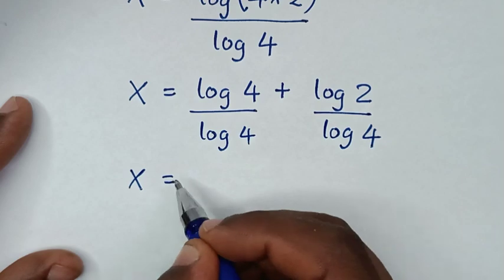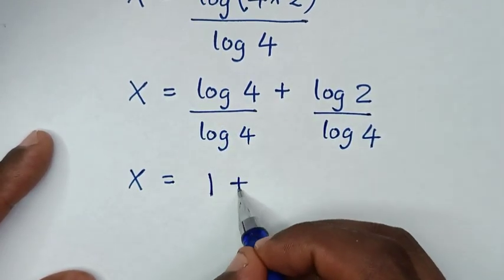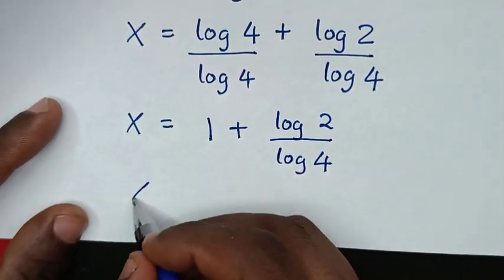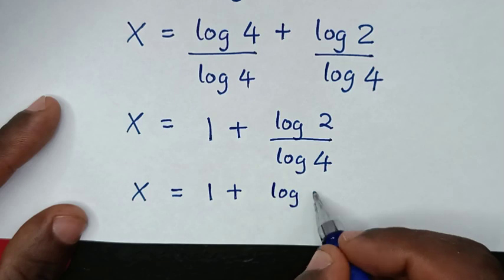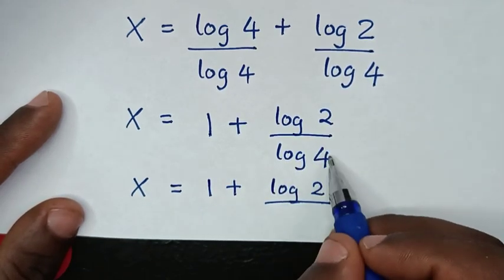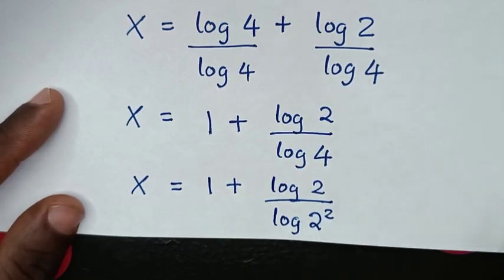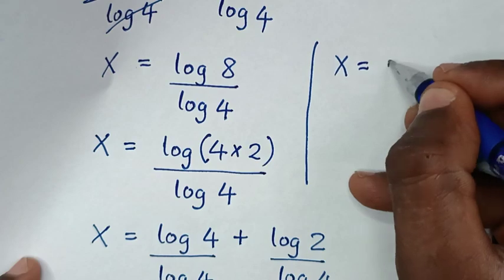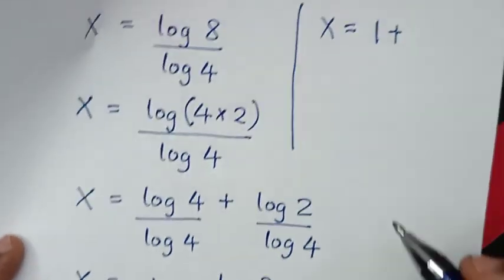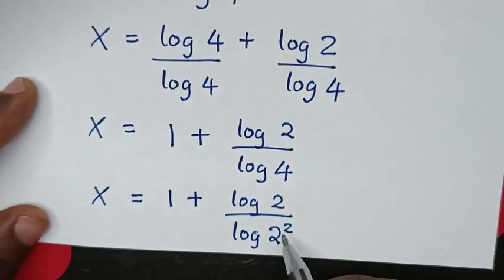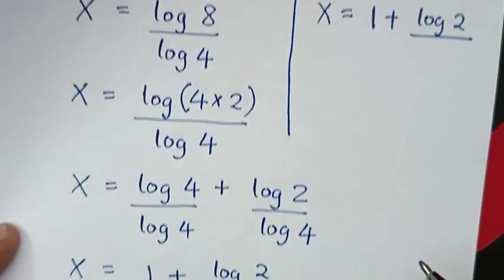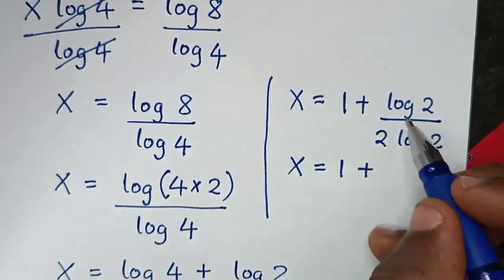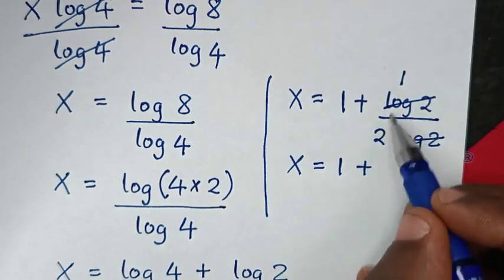Then it will be x is equal to log of 4 divided by log of 4, which is 1, plus log of 2 over log of 4. Now 4 is the same as 2 power 2, so it will be log of 2 over log of 2 power 2. This power 2 will move to the base, so it will be 2 times log of 2 in the denominator. Then x is equal to 1 plus log of 2 divided by 2 times log of 2, and log of 2 divided by log of 2 is 1, giving 1 over 2.